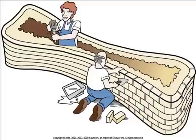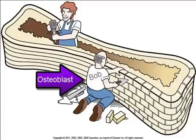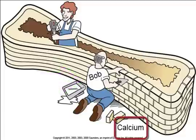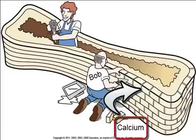On this diagram of the two guys and the bone, the guy on the outside building up is Bob the Builder — he's building new bone. He takes his bricks made out of calcium from the blood. So when Bob needs to build up the outer layers of bone, he takes calcium from the blood and puts it into the bone.